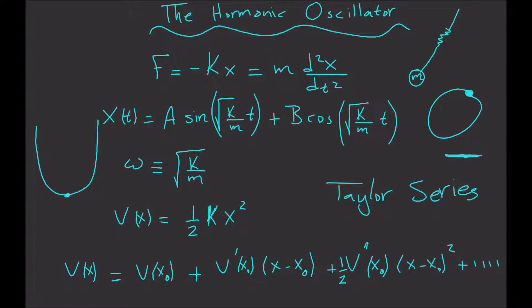The fourth term also matters, but compared to the second one we can ignore it—we can approximate it to be equal to zero compared to the third term. So now we have our potential function: V(x) approximately equals one-half times the second derivative around x₀ times (x minus x₀) squared.